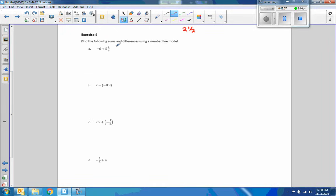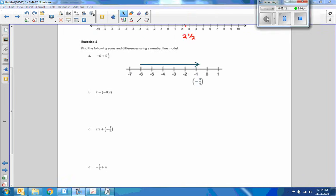Exercise four. Find the following sums and differences using the number line model. Here's the solution to A. Started at negative six. Moved to the right, five and one-quarter. Answer negative three quarters. Here's B. Started at seven. Minus a negative means plus. It's 0.9. Notice this is seven, and this is eight. Seven point one, seven point two, seven point three, four, five, six, seven, eight, nine. That was intense. And so there's our number line for decimals.